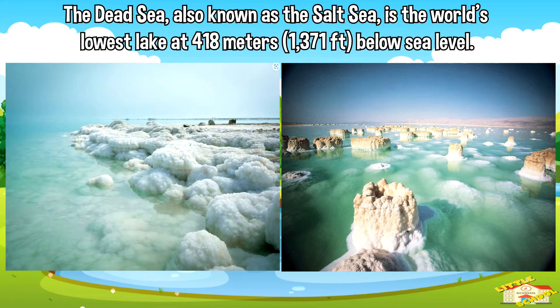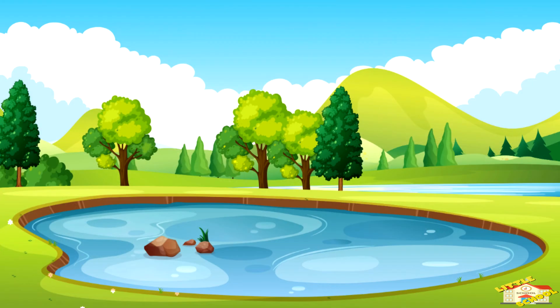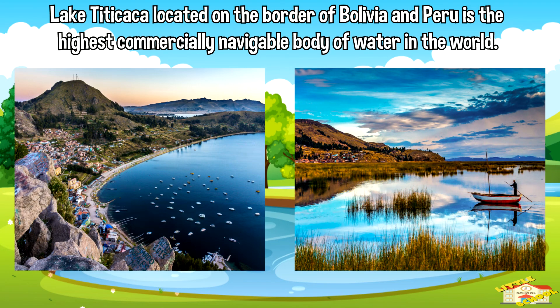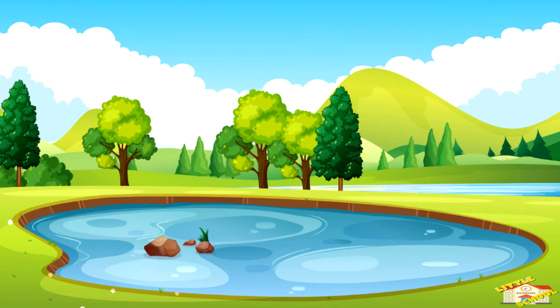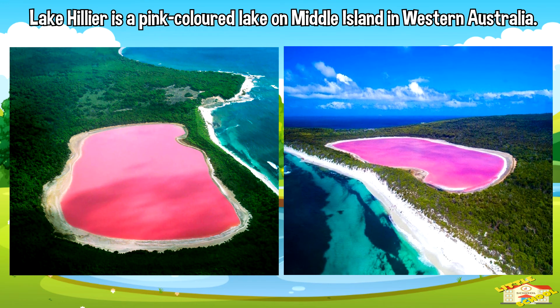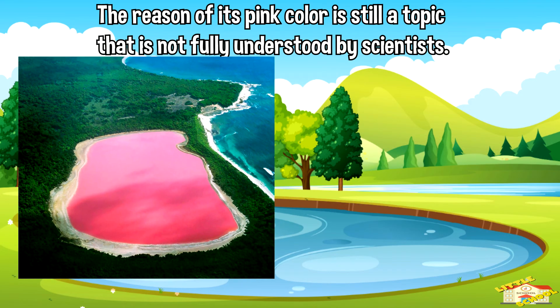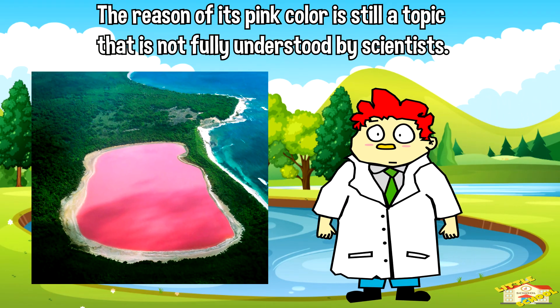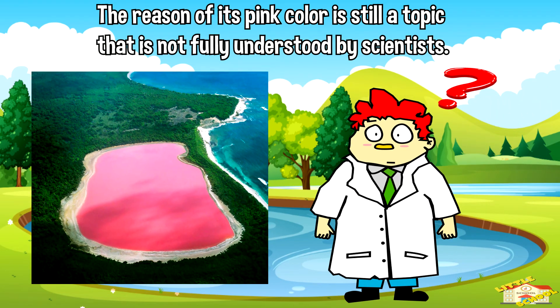The Dead Sea, also known as the Salt Sea, is the world's lowest lake at 418 meters below sea level. Lake Titicaca, located on the border of Bolivia and Peru, is the highest commercially navigable body of water in the world. Lake Hillier is a pink-colored lake on Middle Island in Western Australia. The reason for its pink color is still a topic not fully understood by scientists.